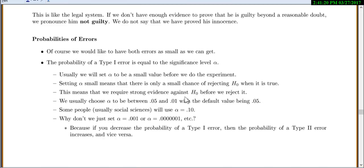We usually choose alpha to be between 0.05 and 0.01. Default is 0.05. Some people, like social sciences, use alpha 0.10 by default.